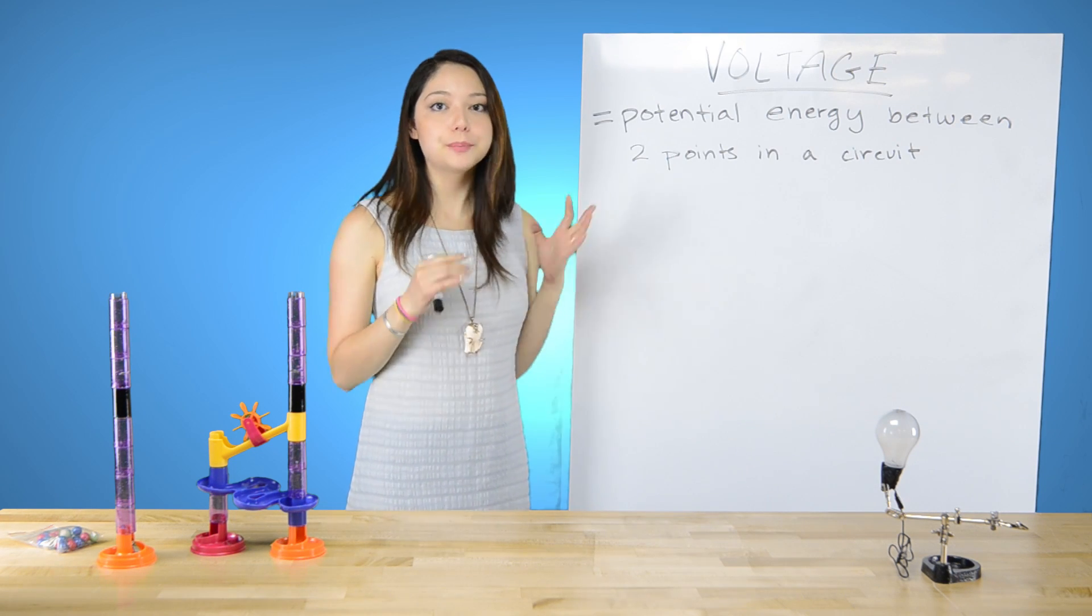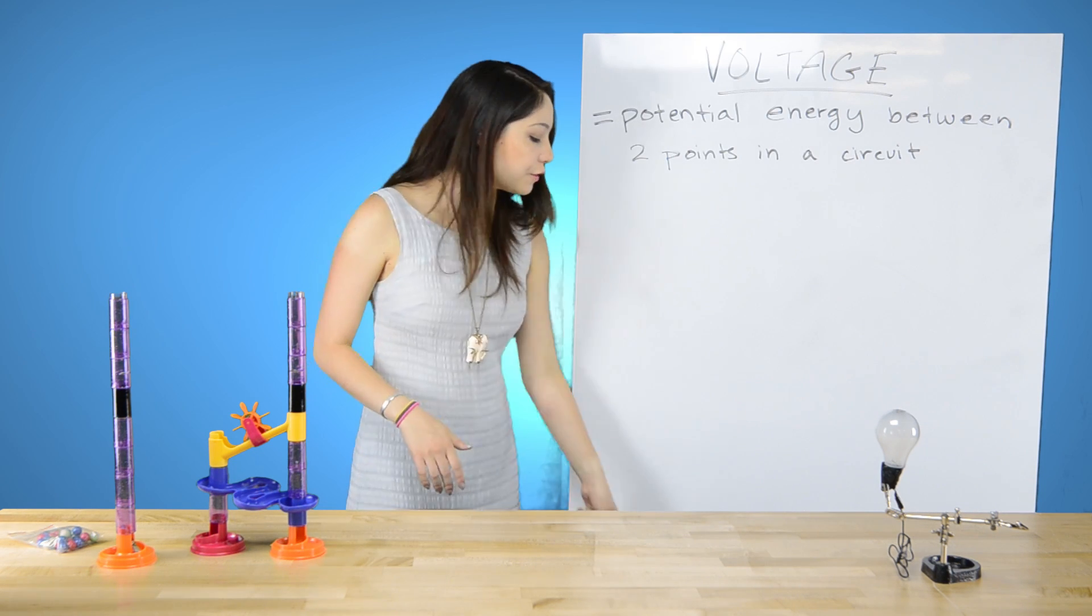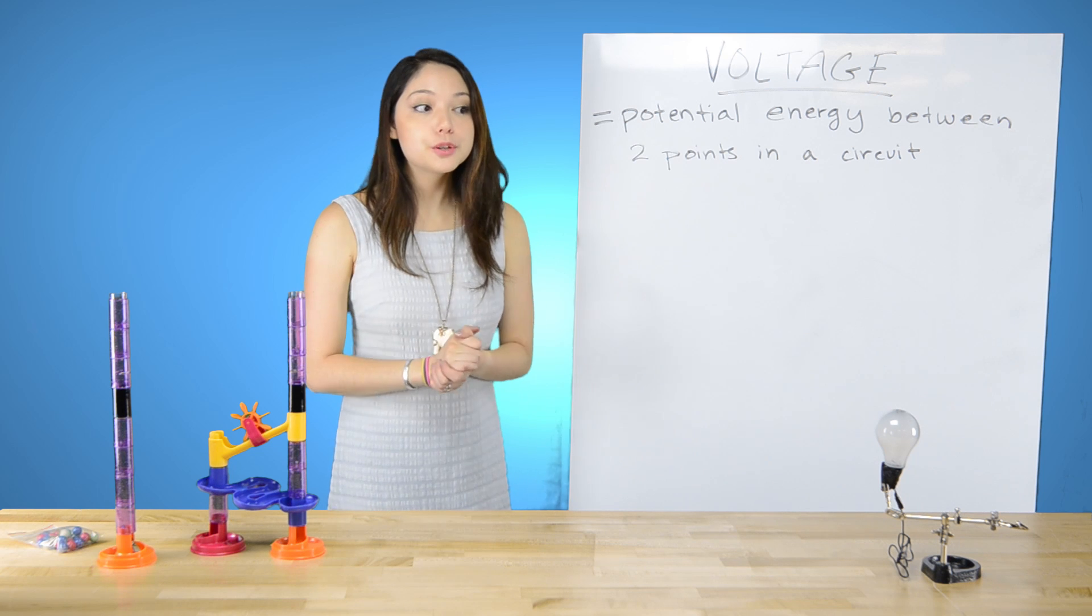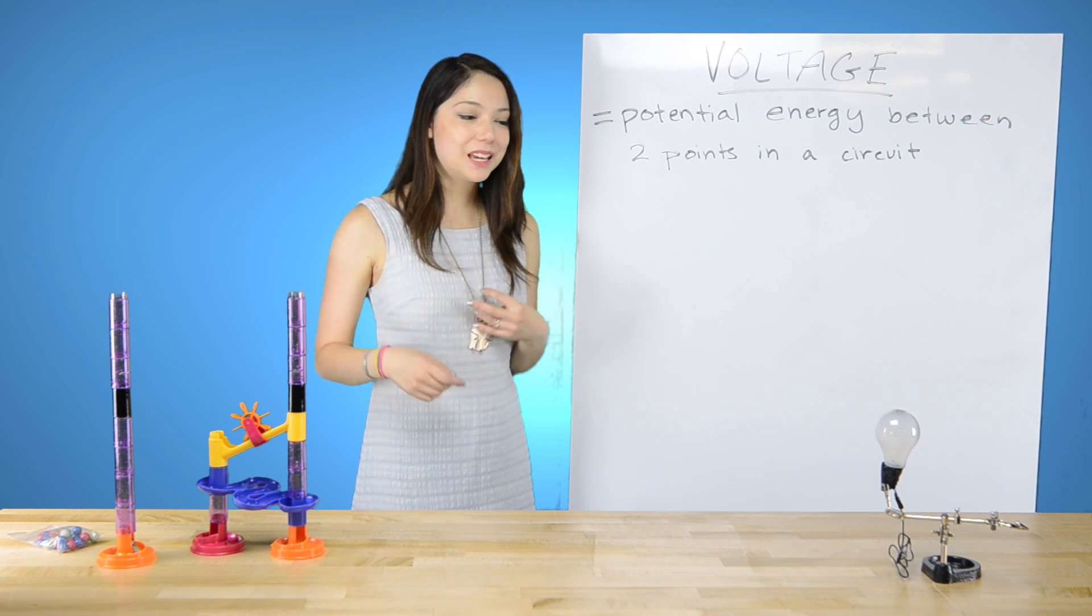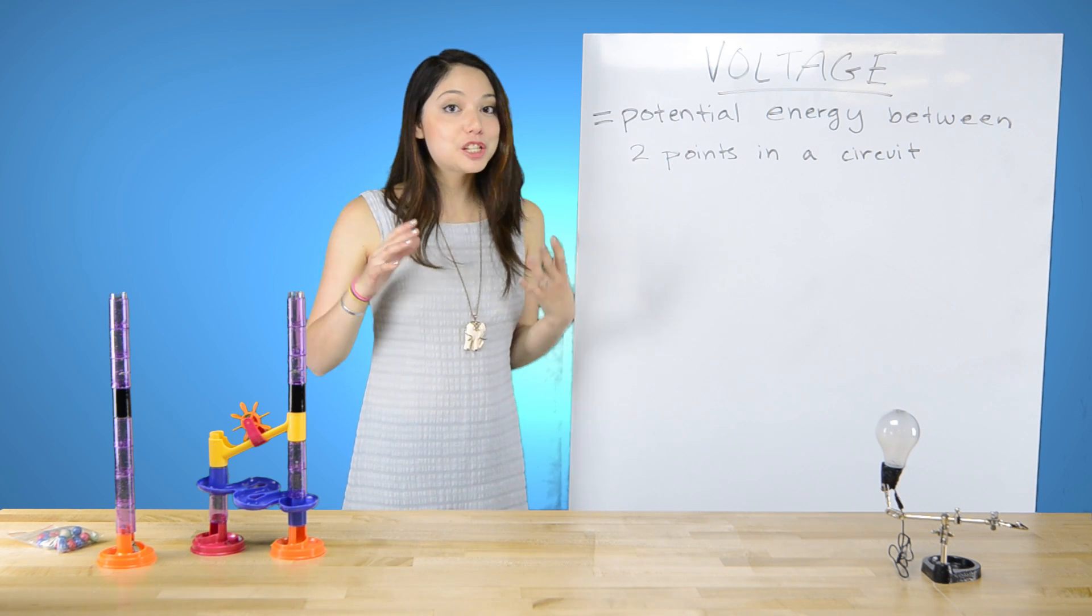So the next thing is voltage. So voltage is the potential energy between two points in the circuit. If you've taken any mechanical physics class, you might know that potential energy is based in layman's terms, height.